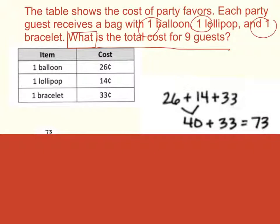And then 40 plus 33 will give me a sum of 73. So now that I have the total cost for all three of my items, I now need to find out what is the total cost for nine guests. So that would be 73 times 9.